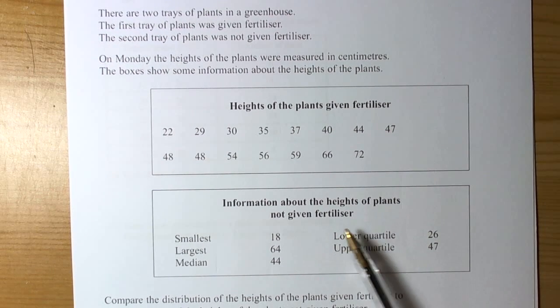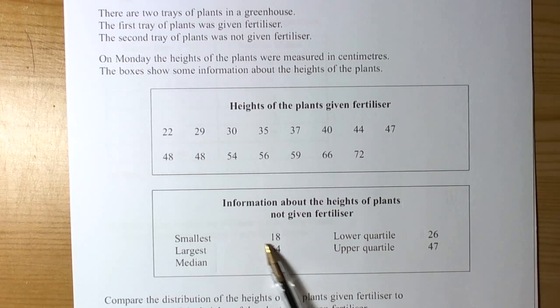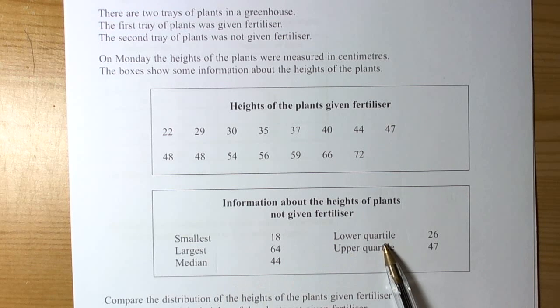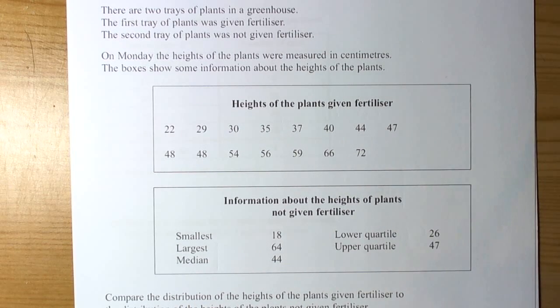They've given you a hint in the question that to compare them, they've calculated the smallest, largest, and the quartiles for this set of data. So they want you to compare the distributions, therefore it would be sensible to calculate the same things for this set of data here.